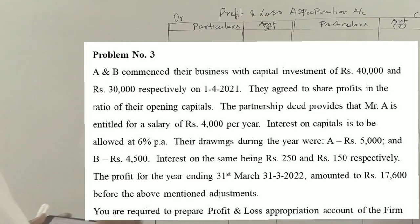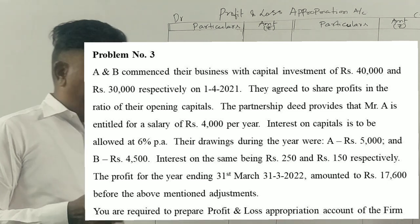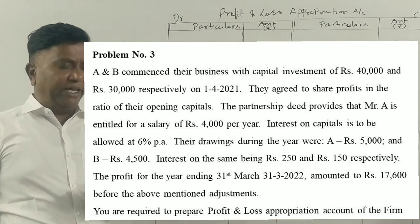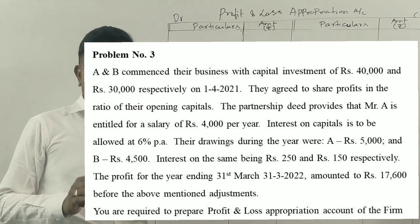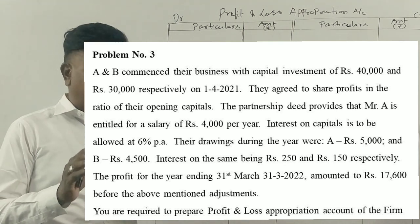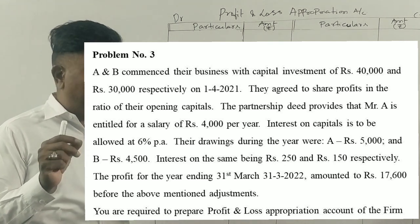Okay guys, the next question is: A and B commence their business with a capital investment of Rs. 40,000 and Rs. 30,000 respectively on 1-4-2021.